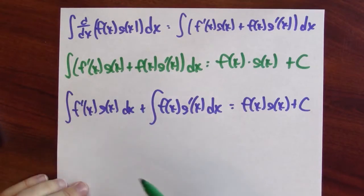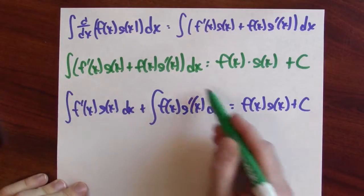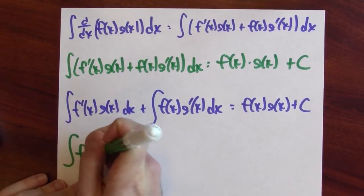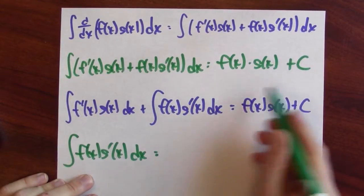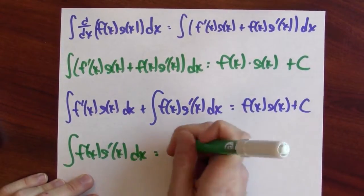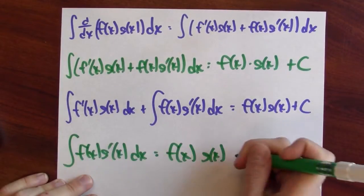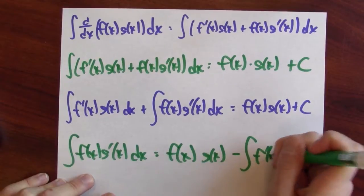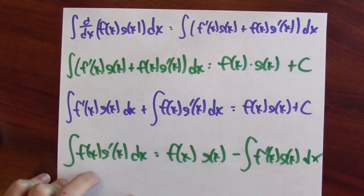We can rearrange it a bit more. Subtracting one integral from both sides, the left-hand side is just this integral: the integral of f(x)g′(x) dx equals f(x)·g(x) minus the integral of f′(x)g(x) dx.